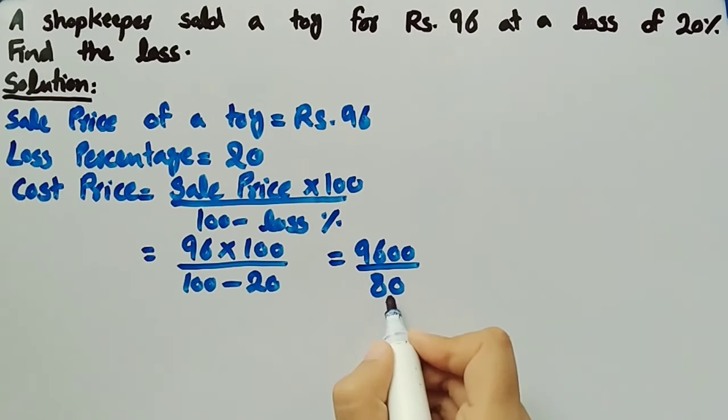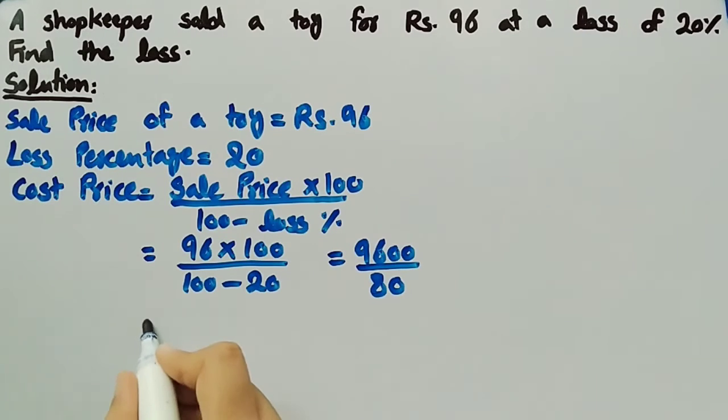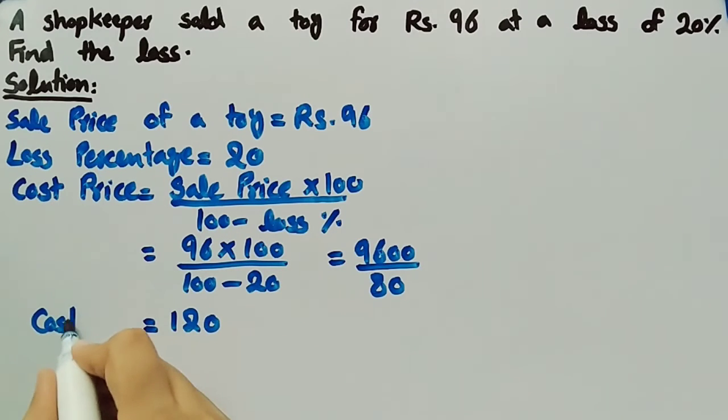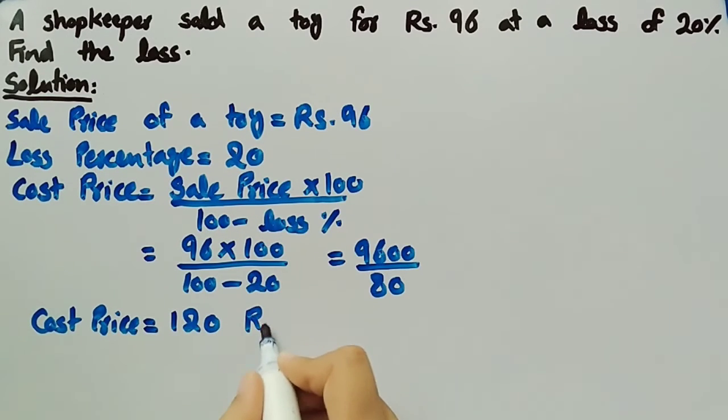When we divide 9600 by 80 we get 120, so cost price is 120 rupees.